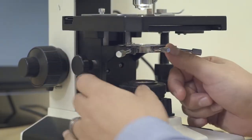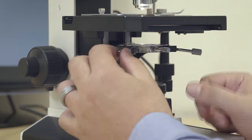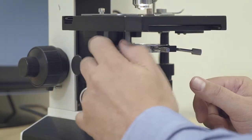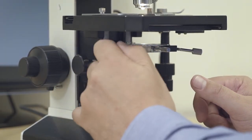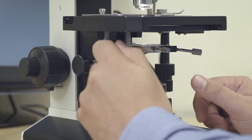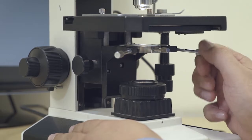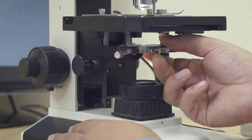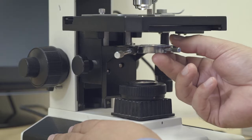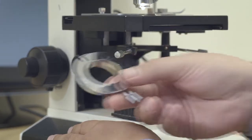To remove this ring we need to unscrew the centering knobs. And that will then allow us just to slide this condenser ring out from under the stage.